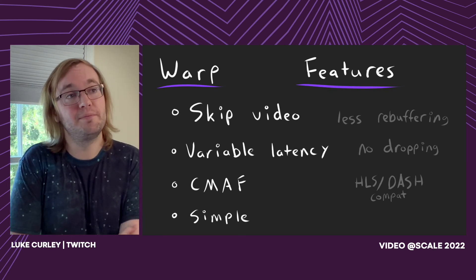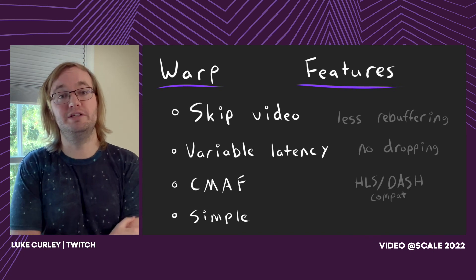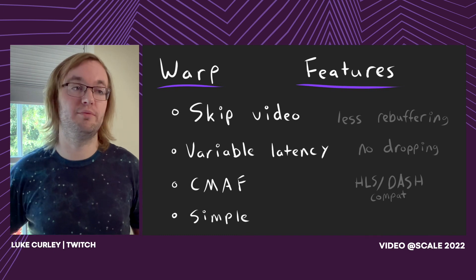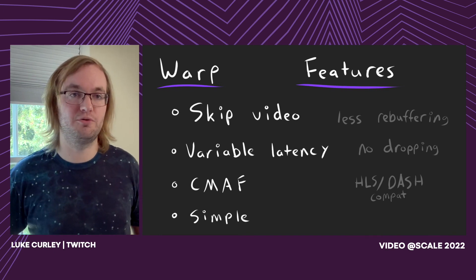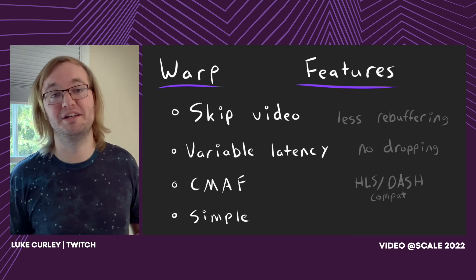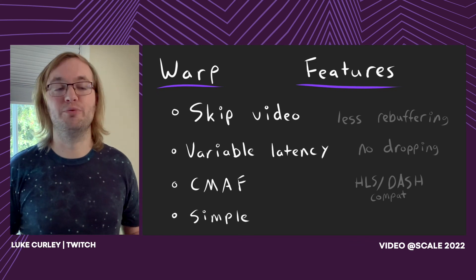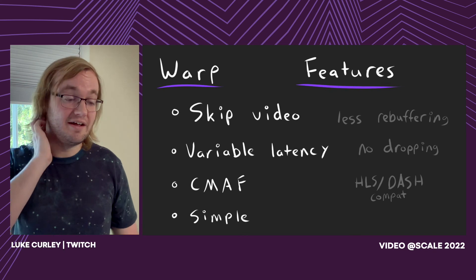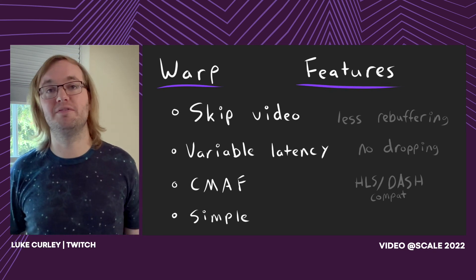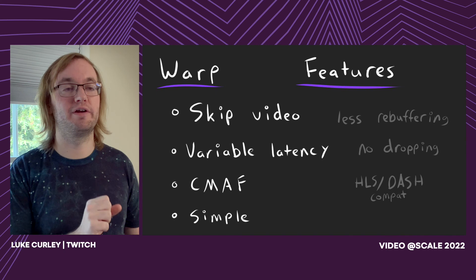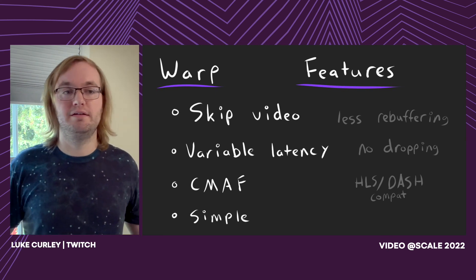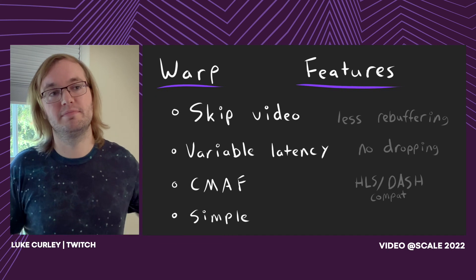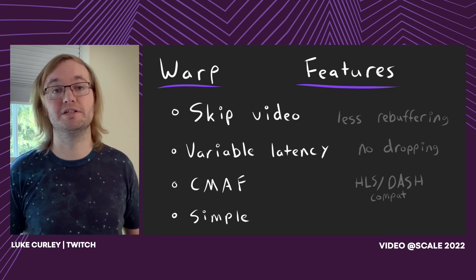It's also CMAF compatible - we just use the existing segments from HLS and Dash and write them over QUIC. It's backwards compatible: if QUIC is not supported, we just fall back to HLS. We don't need different segments. And I think the big one is simplicity - you could just take a QUIC library off the shelf, plug it into the broadcaster and the player. There's a little bit of reordering streams, but the core network logic is handled by the QUIC library itself.